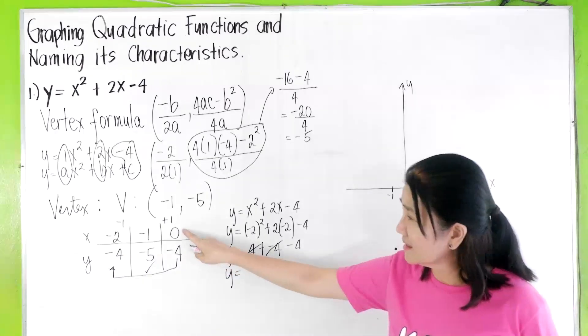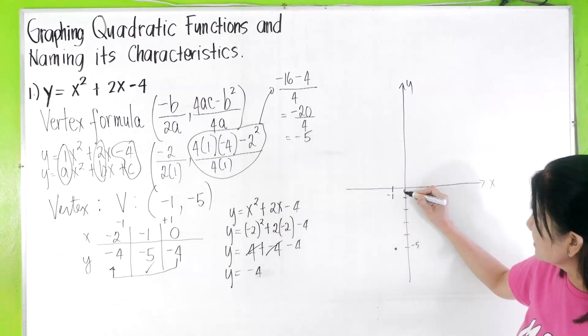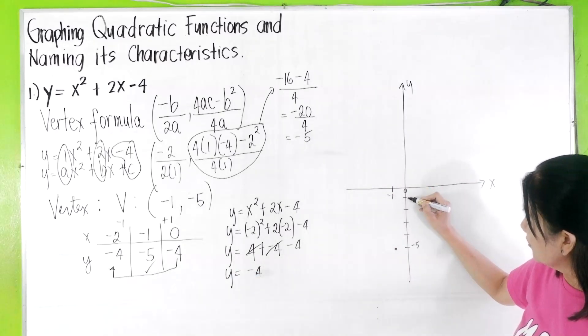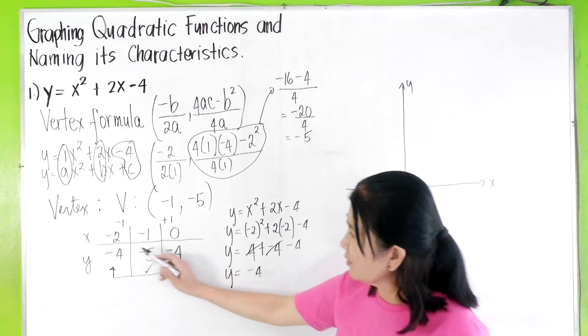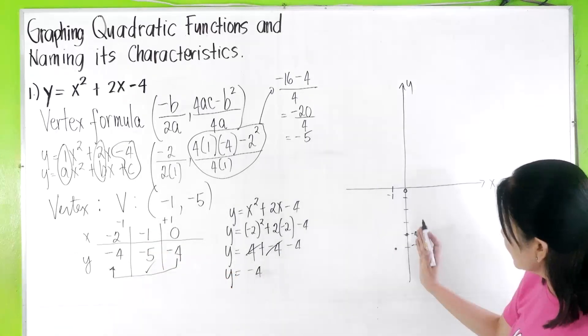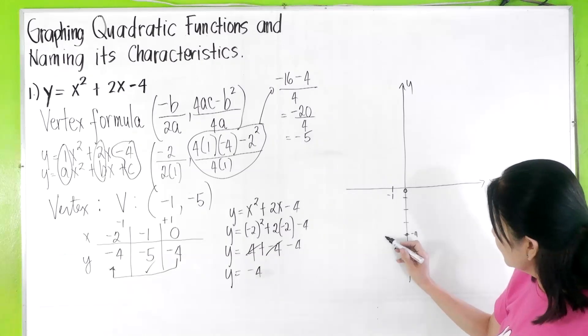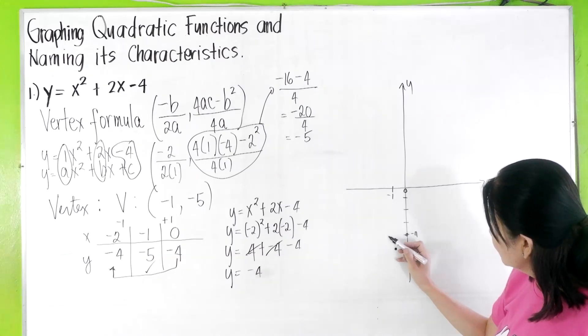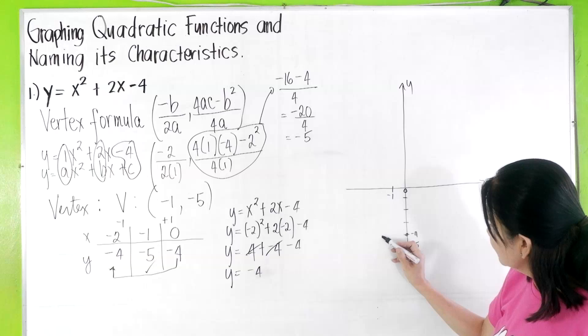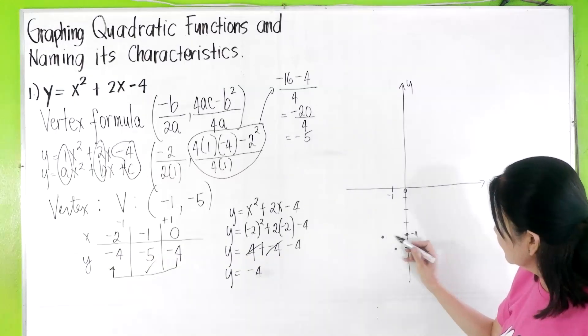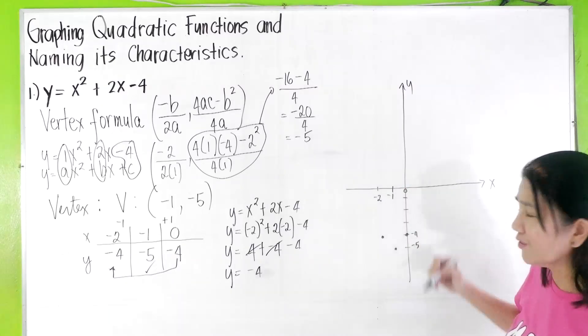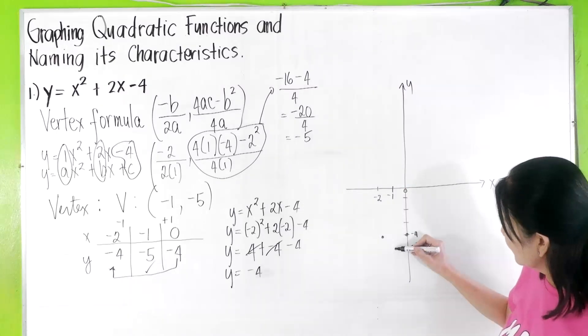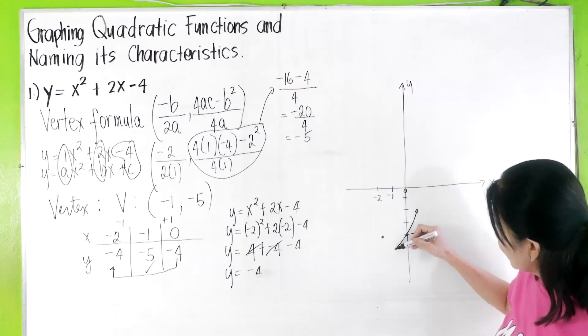And then, 0, -4. This is 0, -1, -2, -3, -4. 0, -4 here. So, even without plotting this, you just have to locate here. The symmetrical point. As you can see, this is now -2, -4. And then, connect this. You have it.